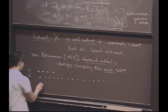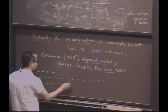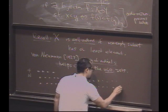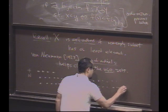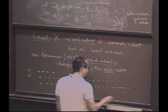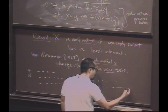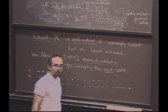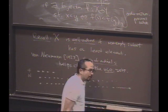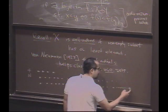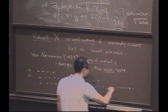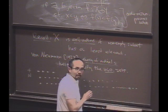But there are other well-ordered sets besides this. For instance, how about the natural numbers going on, and then right at the very end, after all the natural numbers, I put another element there — is that a well-ordered set? Yes, it is; every subset has a least element. And what if from there I decide to start putting another point? Is this whole set well-ordered? Yes — every subset has a least element.